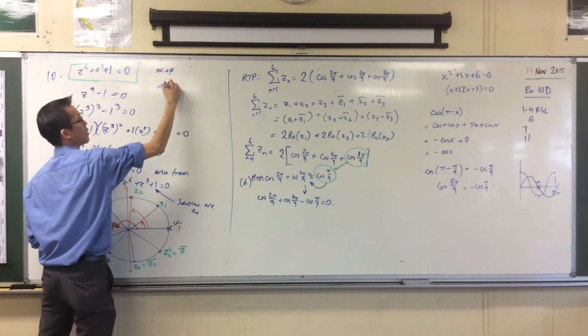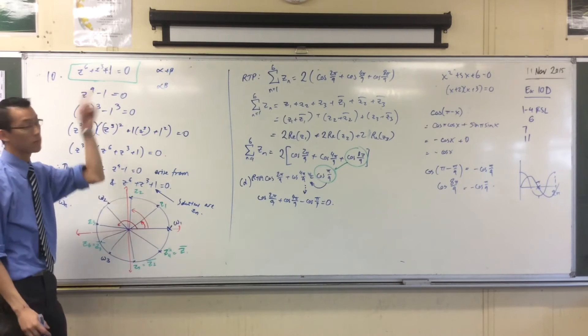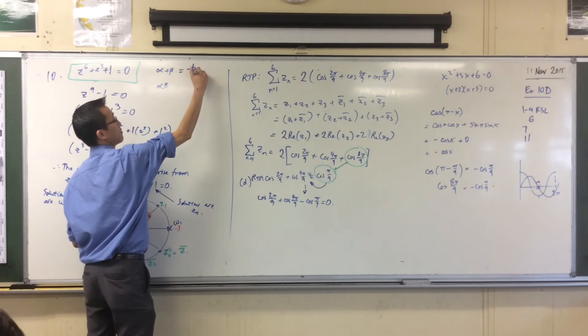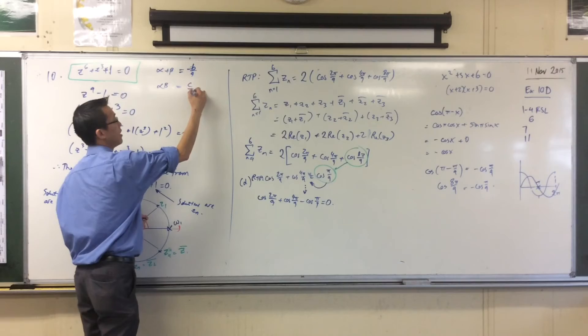Alpha plus beta, that's the sum, and there's the product, right? What's the sum? Minus B on A. Minus B on A. And the product? C on A. C on A, okay.